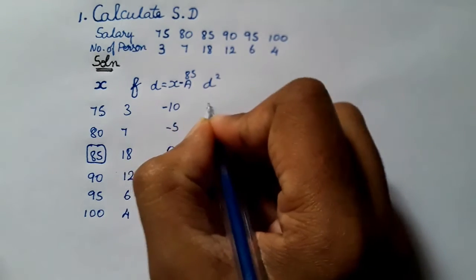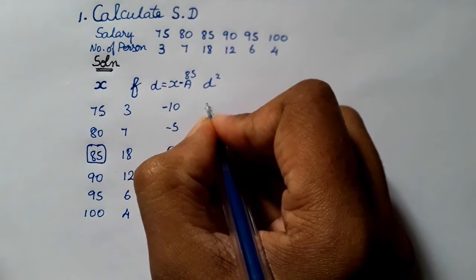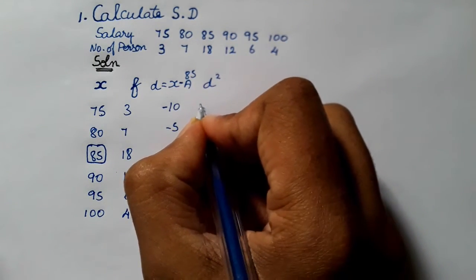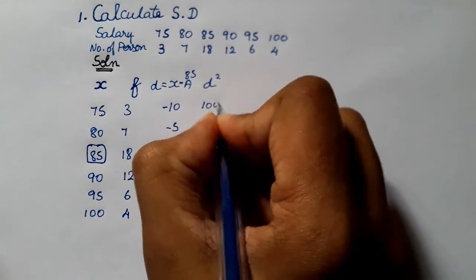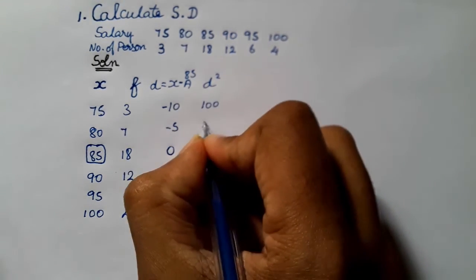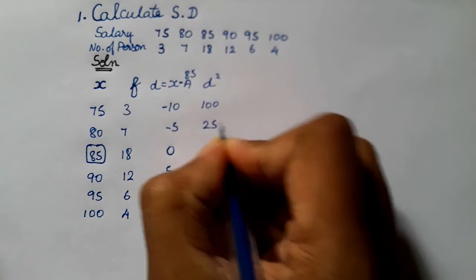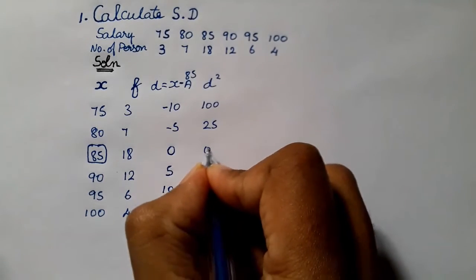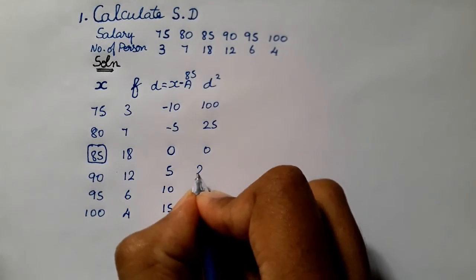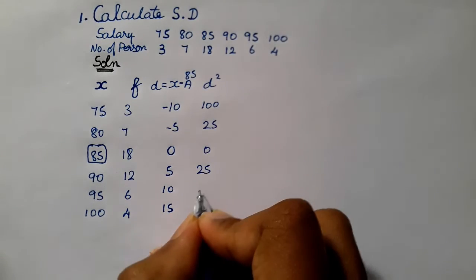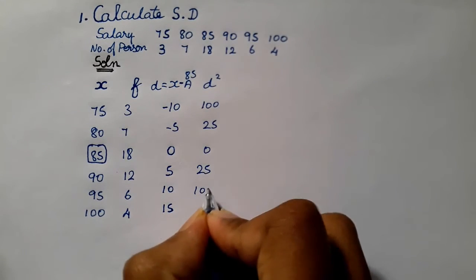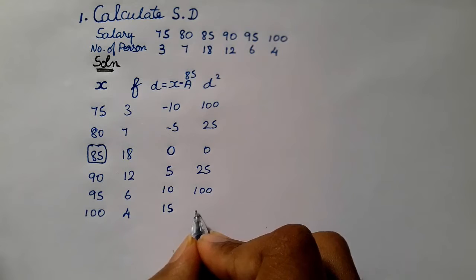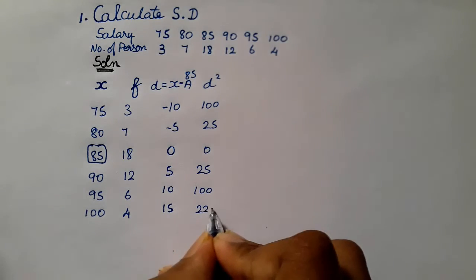Now let's look at D squared. Minus 10 squared is 100. 5 squared is 25. 0 squared is 0. 5 squared is 25. 10 squared is 100. 15 squared is 225.